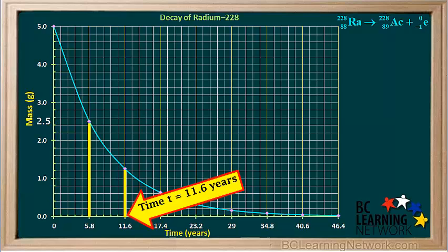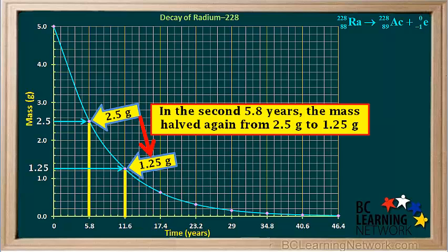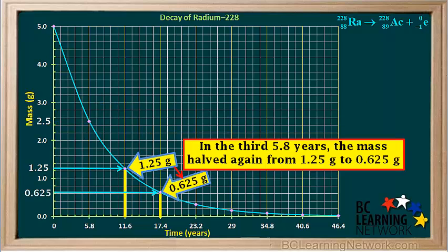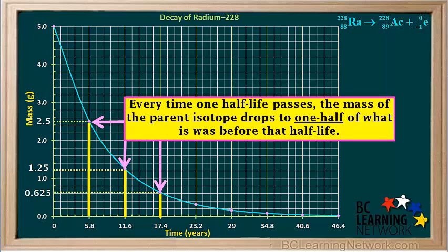We let the sample sit for another 5.8 years, so now it's a total of 5.8 plus 5.8, which is 11.6 years from when we first started with the original sample. We see that in the second 5.8 years, the mass went from 2.5 grams down to 1.25 grams, so it halved again. We can see that every time one half-life passes, the mass of the parent isotope drops to one half of what it was just before that half-life.